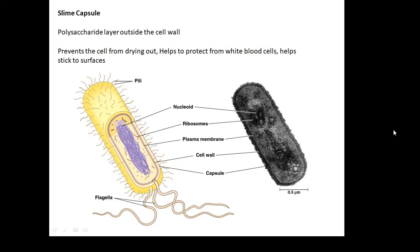The slime capsule is the outer layer outside the cell wall. It prevents the cell from drying out, helps to protect from white blood cells, and helps to stick to surfaces. The slime layer on these prokaryotic cells.